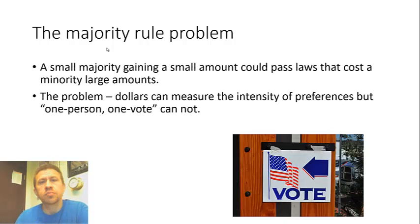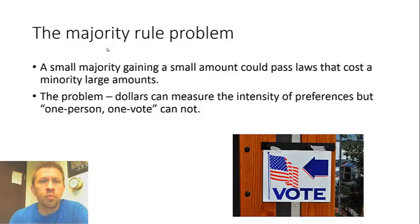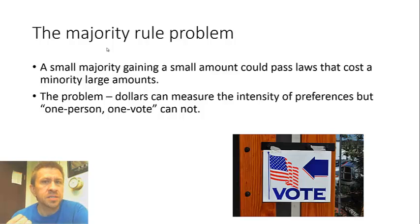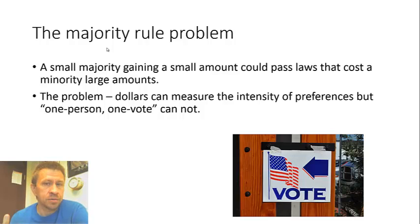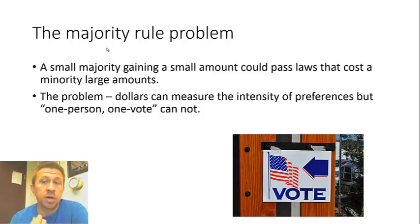The first issue is what we call the majority rule problem. When you have majority rule votes, which are the most common types of votes, you can have serious inefficiencies. You could have a group where there's a small majority, or sometimes even a big majority, who gain a tiny amount of value one way versus the other on a particular law, but cost the minority large amounts of value by passing these laws.